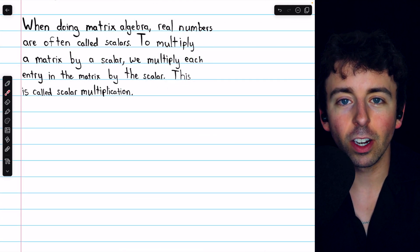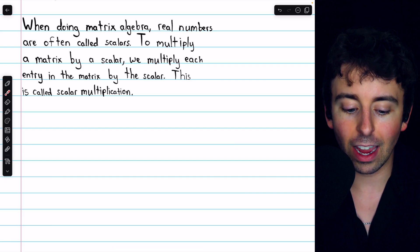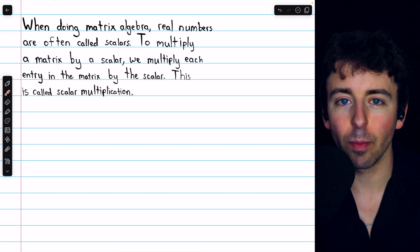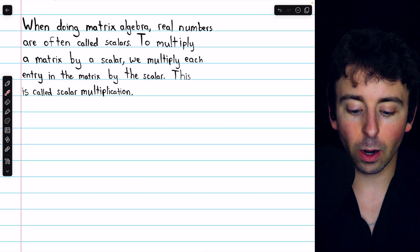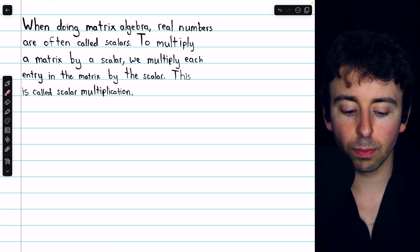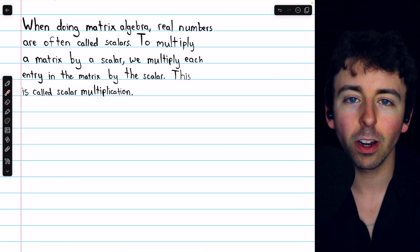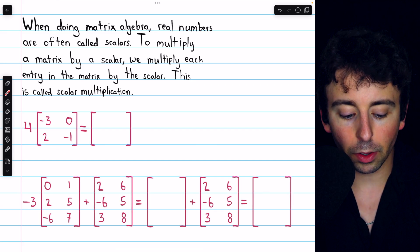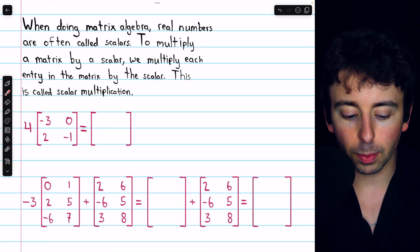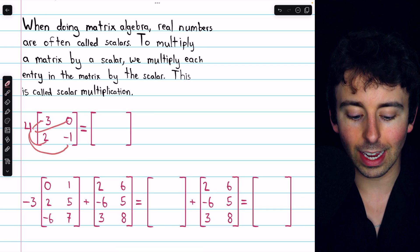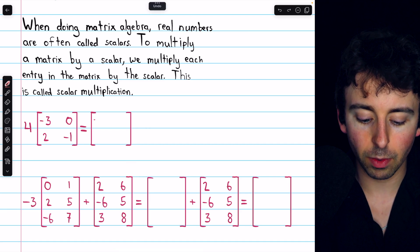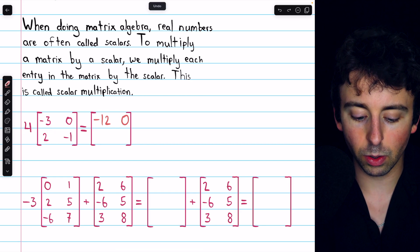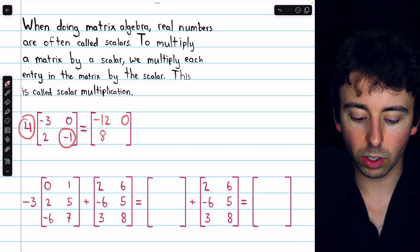One last operation we'll discuss today is scalar multiplication. When doing algebra with matrices, real numbers are often called scalars, to distinguish them from matrices. To multiply a matrix by a scalar, we multiply each entry in the matrix by the scalar. For example, here's a square matrix being multiplied by the scalar four: four times negative three is negative twelve; four times zero is zero; four times two is eight; four times negative one is negative four.